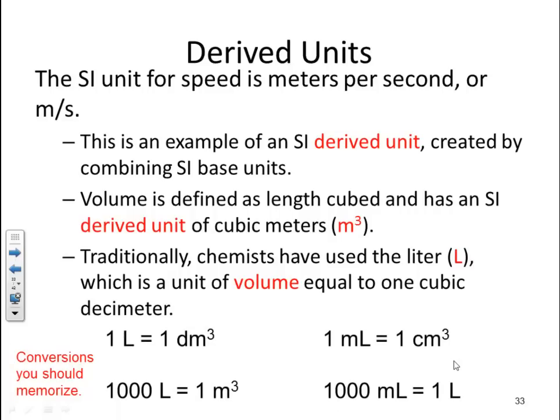One liter is equal to one decimeter cubed. A thousand liters is equal to one meter cubed. One milliliter is equal to one centimeter cubed. And a thousand milliliters is equal to one liter. Now, the more important ones are on the right side here. One milliliter to one centimeter cubed is something you should memorize as well as one thousand milliliters is equal to one liter, which you should already know based on the prefix system.